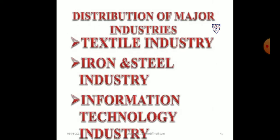Distribution of major industries includes the textile industry, iron and steel industry, and information technology industry. The IT industry is still emerging, while the textile industry and iron and steel industry have been major industries since ancient times. Russia, Germany, China, the US, and Japan are countries where iron and steel industries are found on a major scale. India, South Korea, Taiwan, Japan, and Hong Kong are countries where the textile industry is located. South California's Silicon Valley and India's Bangalore are the major hubs of IT industries.